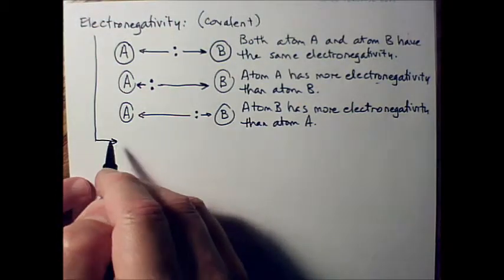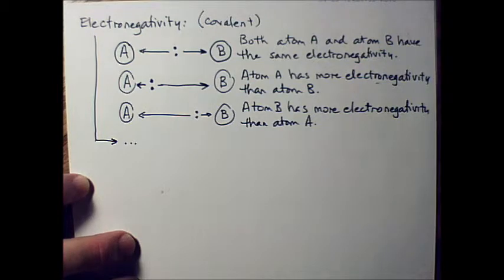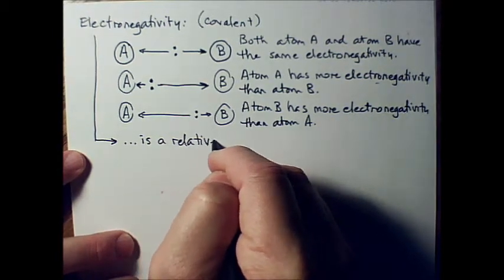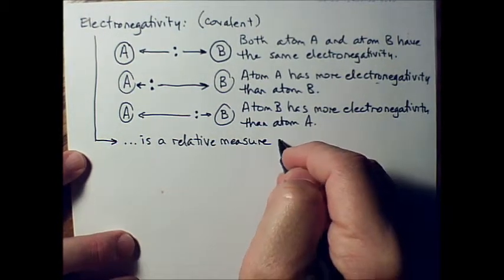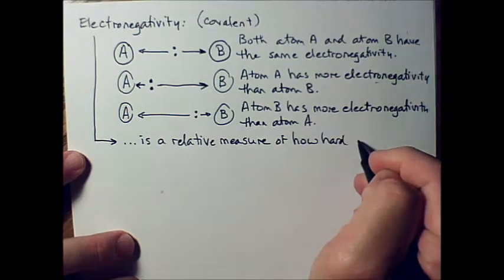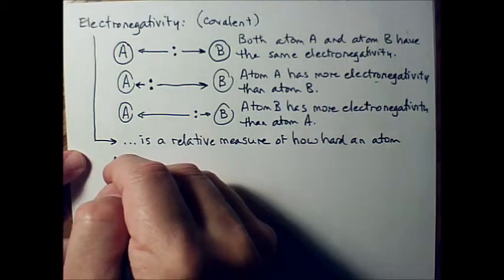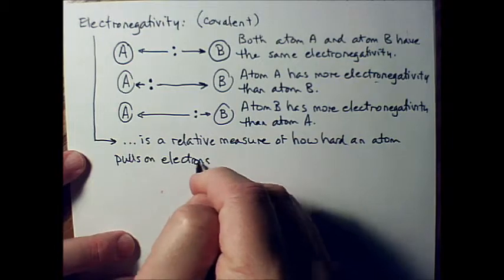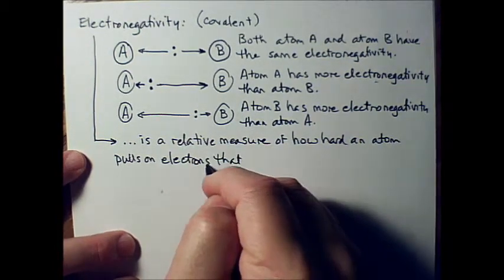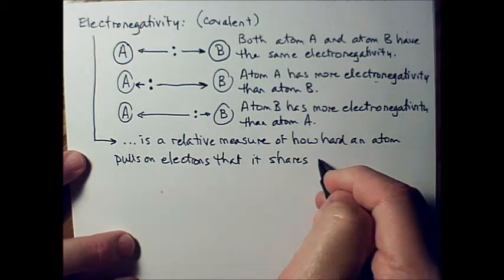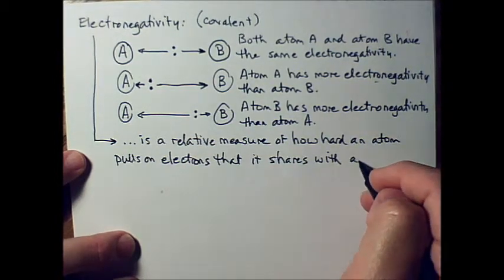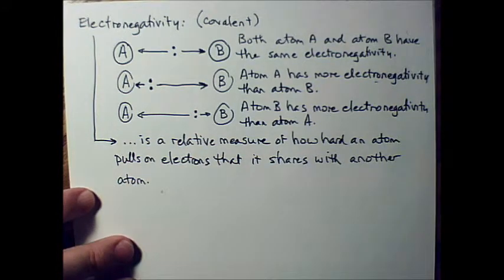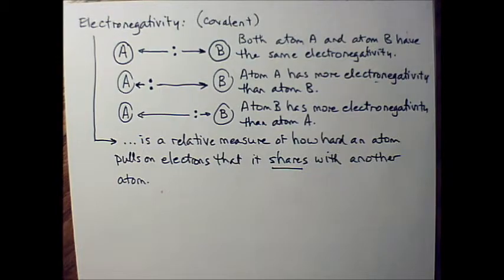So then, what is this thing we call electronegativity? Well, it is a relative measure of how hard an atom pulls on electrons that it shares with another atom. And just to make sure we're making the full circle here in our understanding, when electrons share atoms, what kind of bonding is that? Covalent.